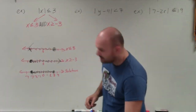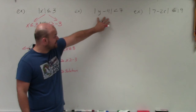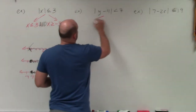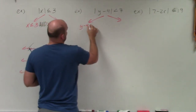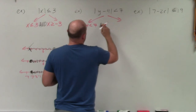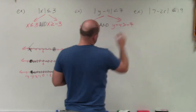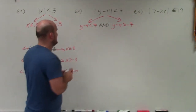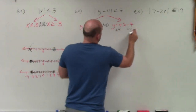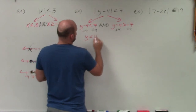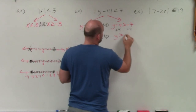Now let's get into the next example, where again we're going to create two cases since we have our absolute values isolated. When doing my two cases, I have y minus 4 is less than 7 and y minus 4 is greater than negative 7. Now I use inverse operations to solve — I add 4 to both sides for both inequalities, giving me y is less than 11 and y is greater than negative 3.